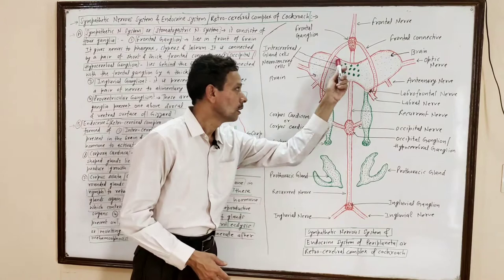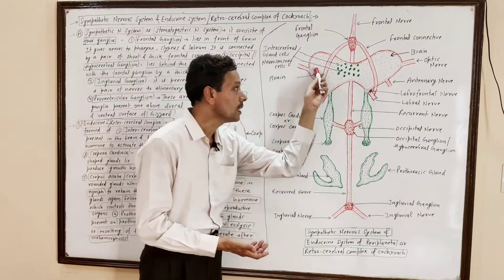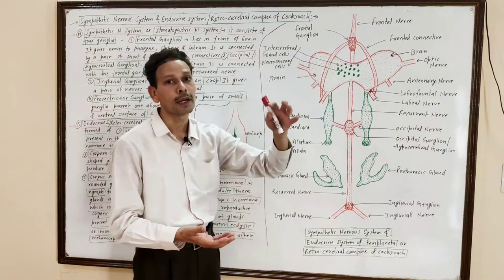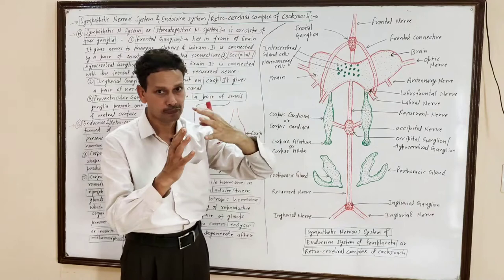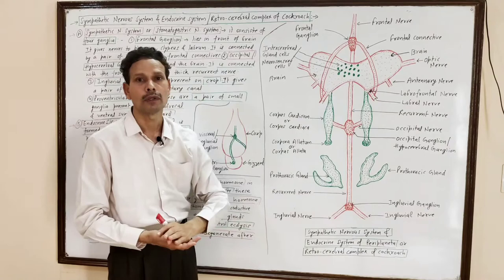This system consists of numerous unicellular secretory glands called neurosecretory cells, or intercerebral gland cells. These cells are present in the brain. These neurosecretory or intercerebral gland cells secrete the brain hormone. These independent nerve cells secrete a growth hormone that controls the functioning of prothoracic glands.